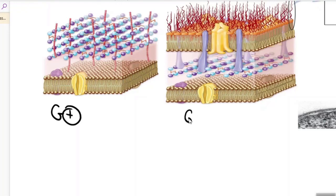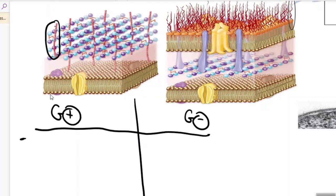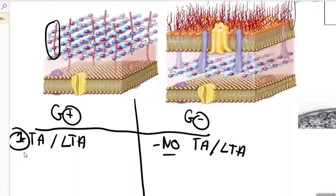I always like to draw a nice little chart to help me remember the key differences. First, starting with gram-positive, remember gram-positive have these unique little red ropes here, I think they look like ropes. These are the techoic acids and the lipotechoic acid. Gram-negative bacteria do not have the techoic acid or lipotechoic acid. That's difference number one.